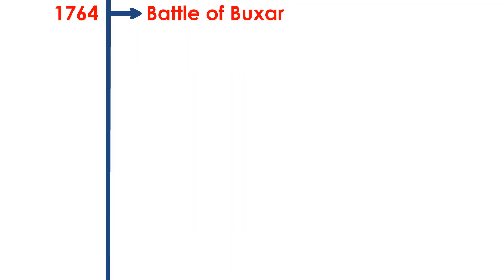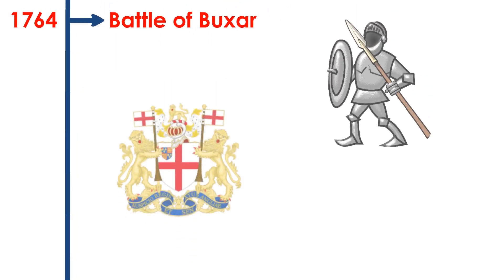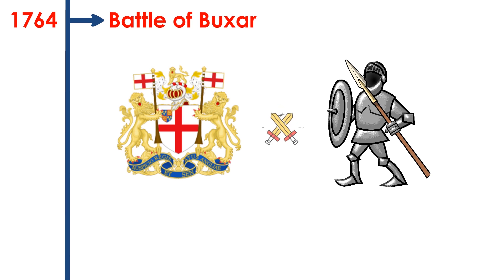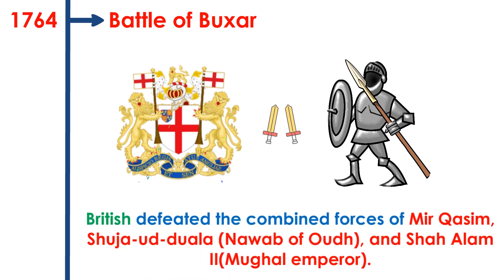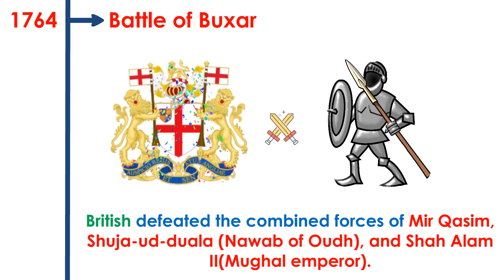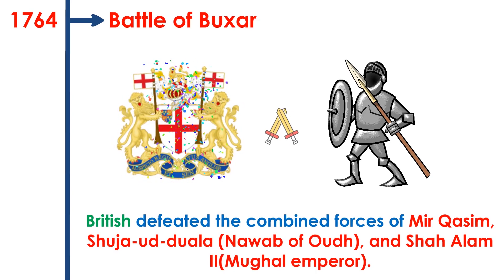Battle of Buxar. This battle was fought between the British Army and the combined forces of Mir Qasim, Sirajud Daulah, the Nawab of Awadh, and Shah Alam II of the Mughal Empire. The British defeated the combined forces.